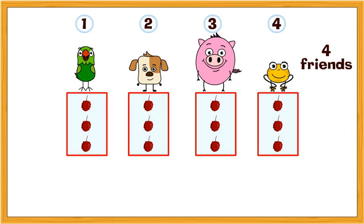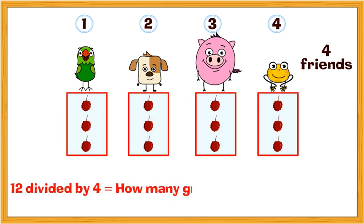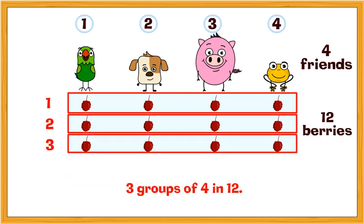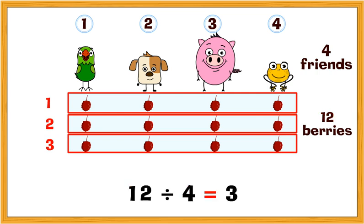We can also think of 12 divided by 4 as how many groups of 4 are there in 12. There are 3 groups of 4 in 12. So 12 divided by 4 is 3.